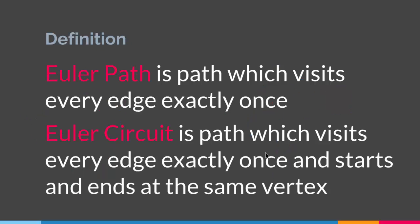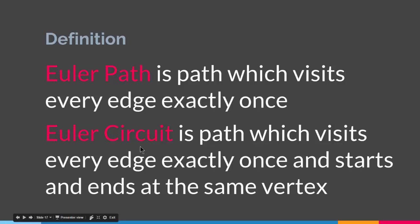So to summarize: an Euler path is a path which visits every edge exactly once. An Euler circuit is a path which visits every edge exactly once and starts and ends at the same vertex. For a graph to have an Euler path, all the vertices have to have even degrees except two of them having odd degrees. For a graph to have an Euler circuit, all the vertices have to have even degrees.